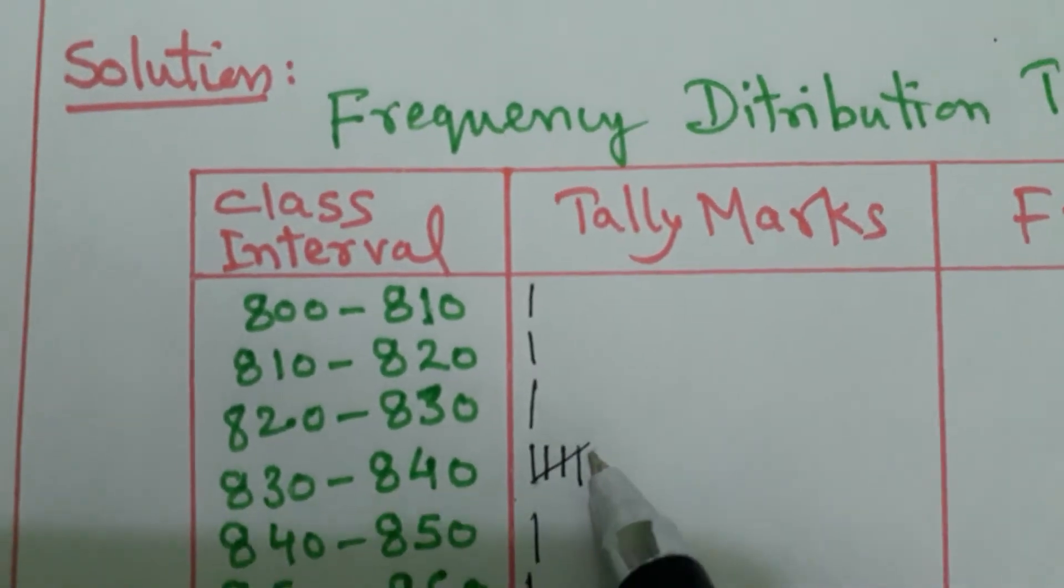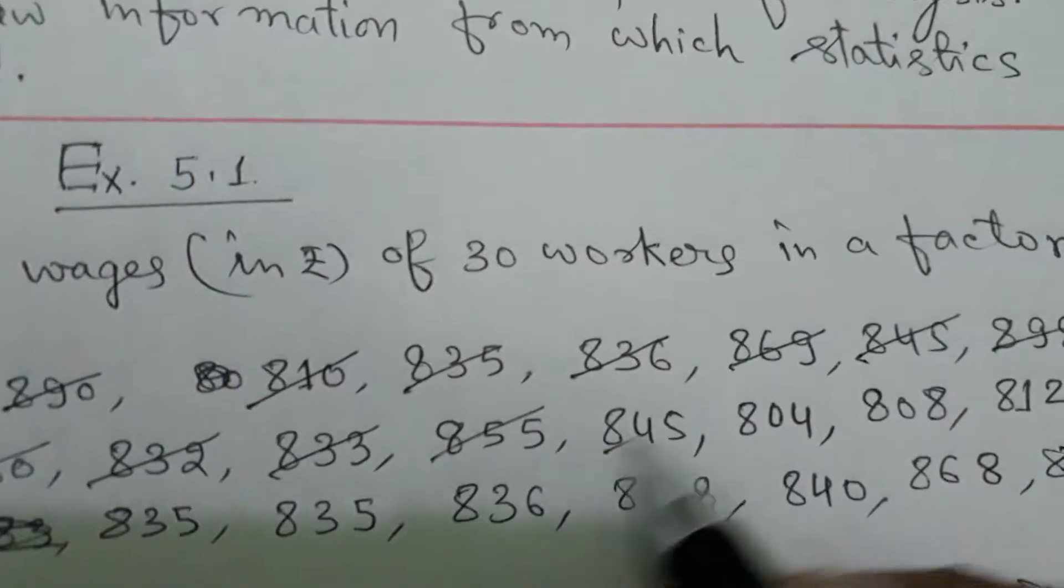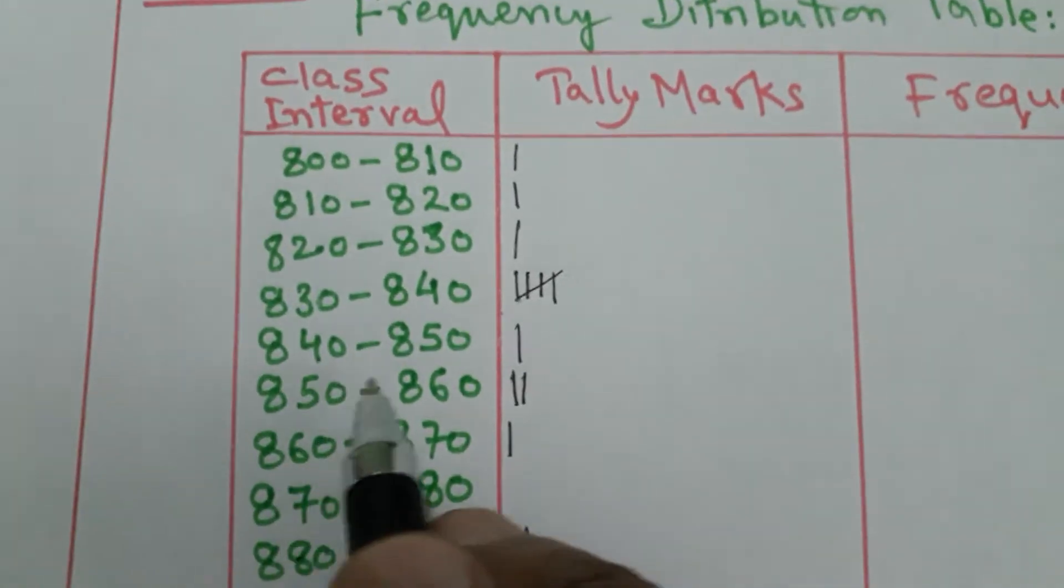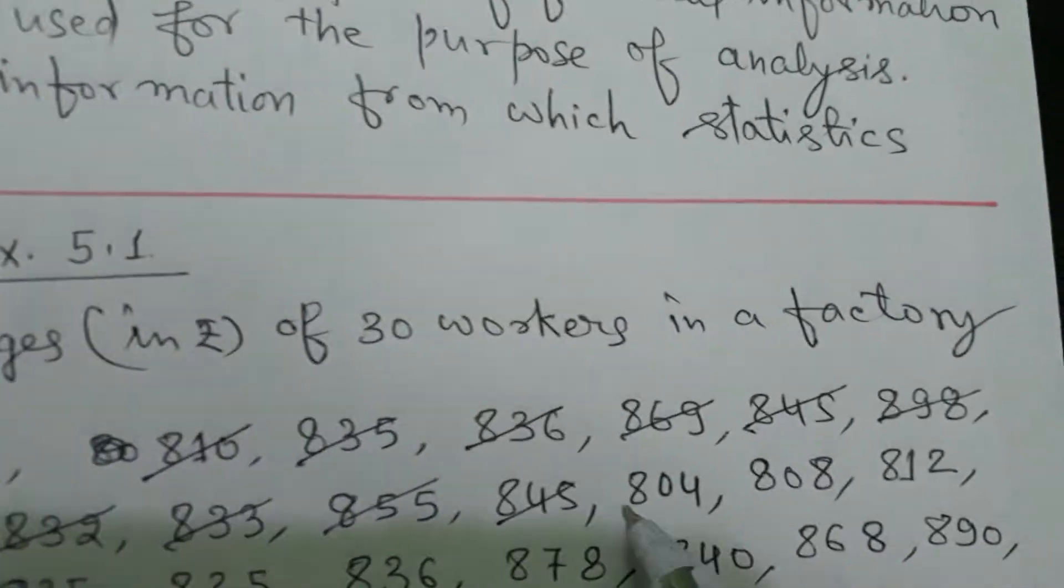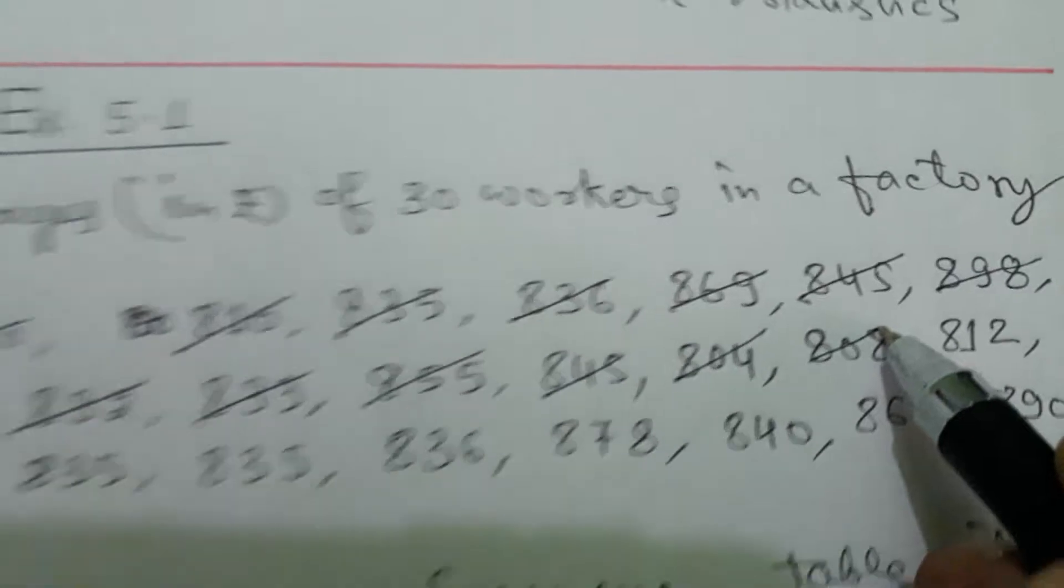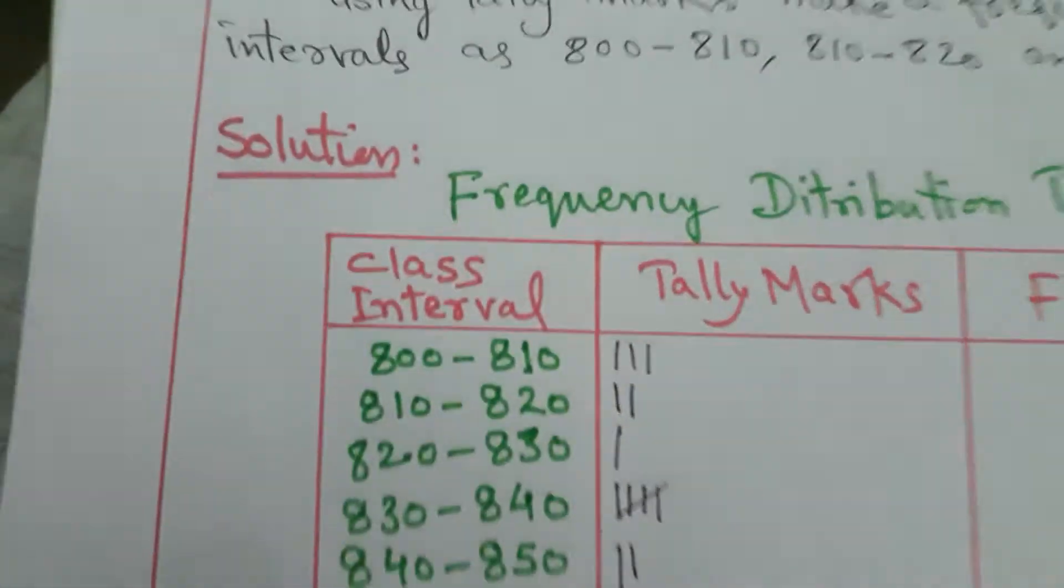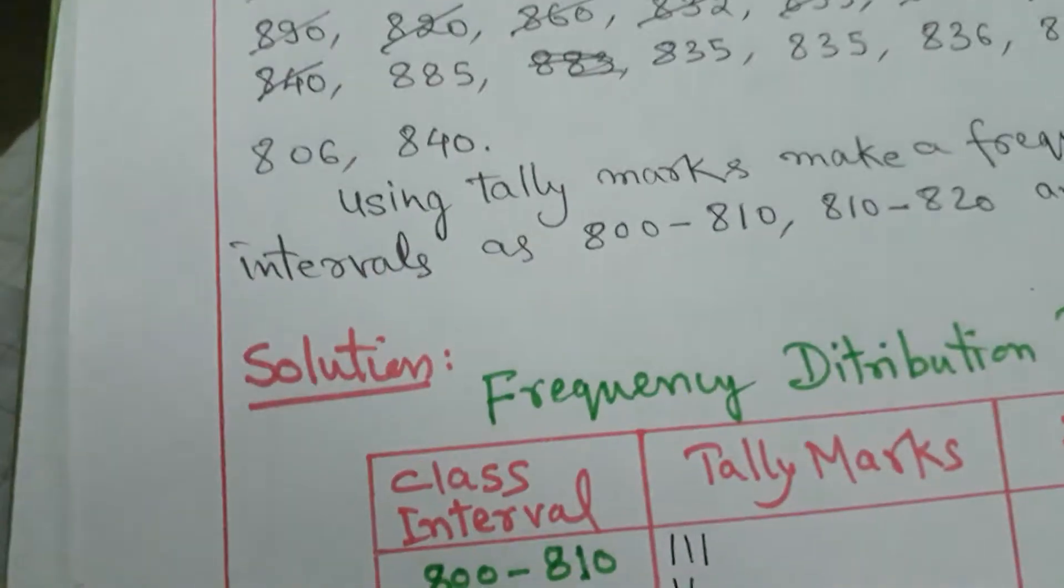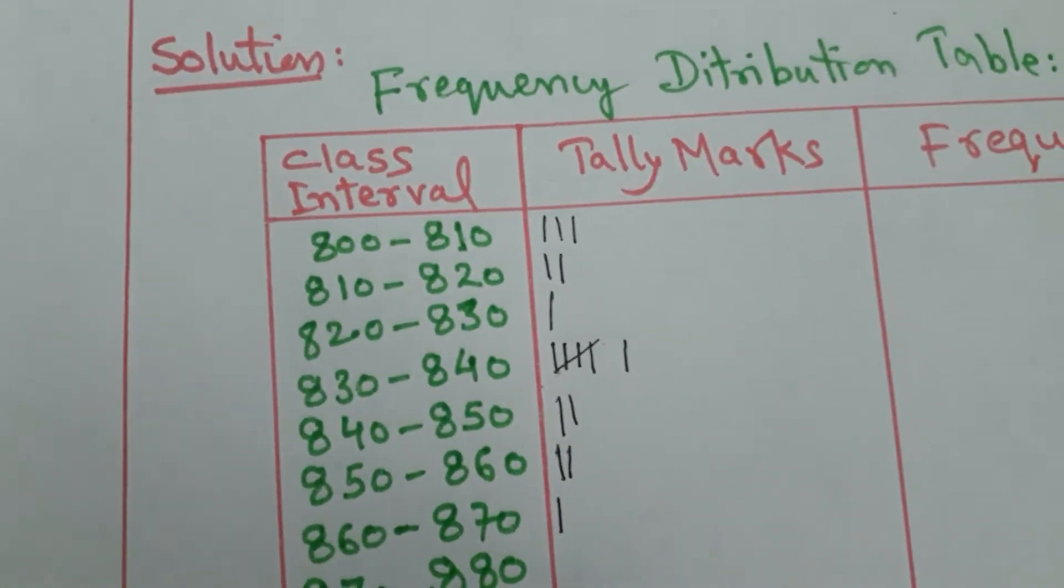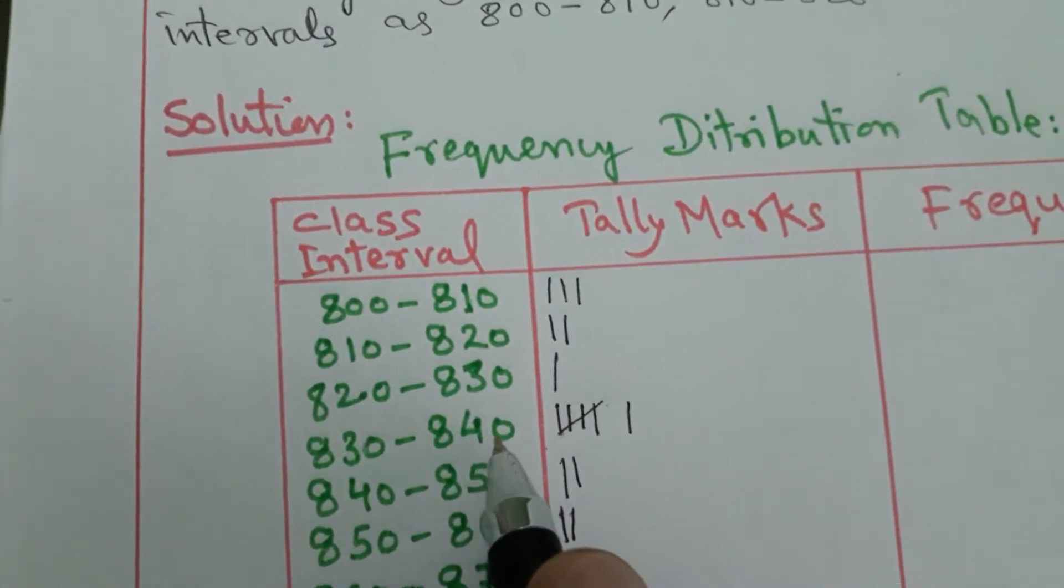So for the fifth one you cut like this. After four lines, you cut like this. That's the rule. 855 is here, 845 is here. 804 is here in this table. 808 is also here, 812 is here. 840 is here.